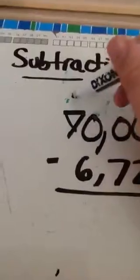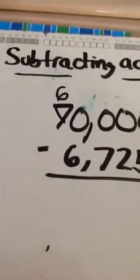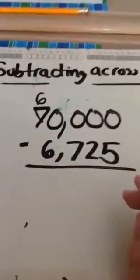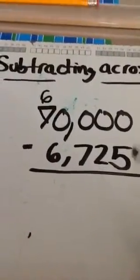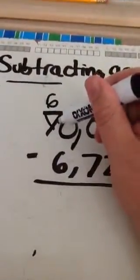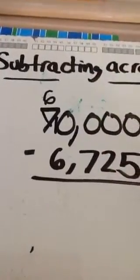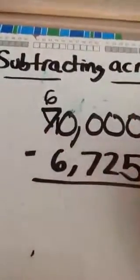What we're going to do is borrow from the first number that we can borrow from, which is the 7. We're going to turn it into a 6. Once we do that, we're going to start borrowing across the problem, going left to right.